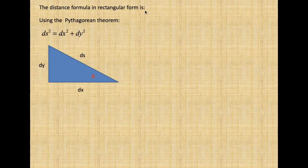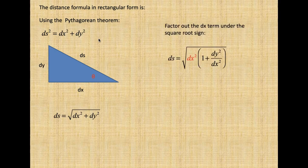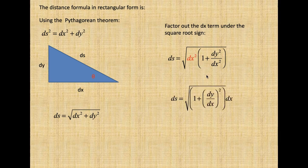The distance formula in rectangular form uses the Pythagorean theorem. ds, the hypotenuse, is equal to √(dx² + dy²). Factoring out the dx term under the square root sign, we have dx² times (1 + dy²/dx²), and then ds equals the square root of (1 + (dy/dx)²) times dx.